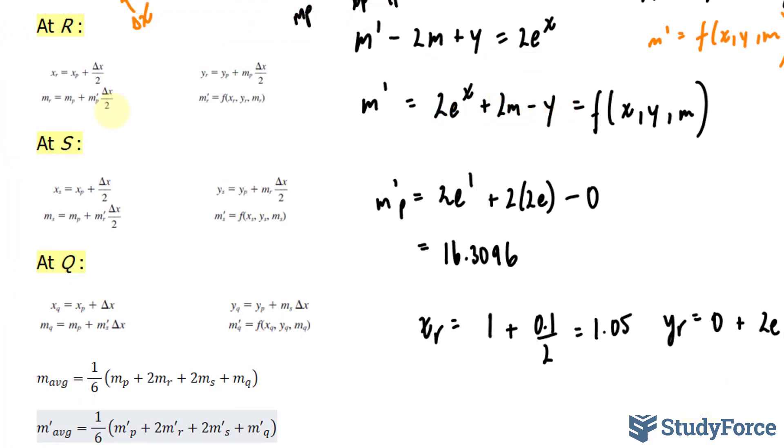Next we'll find m_R. We'll use this formula. m_R = m_P, which is 2e, plus m'_P, which we found was 16.3096, and that's being multiplied to 0.1 over 2. If you place this into your calculator, you should end up with 6.2521.